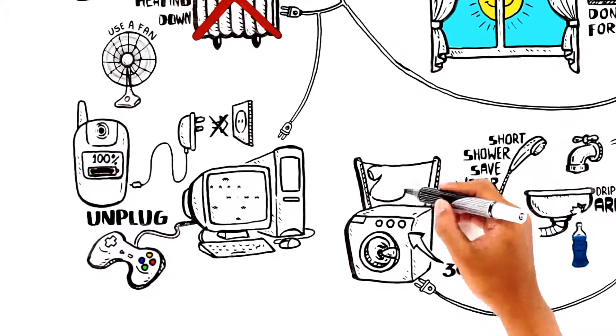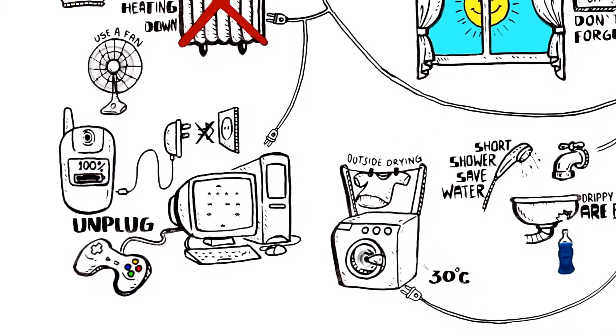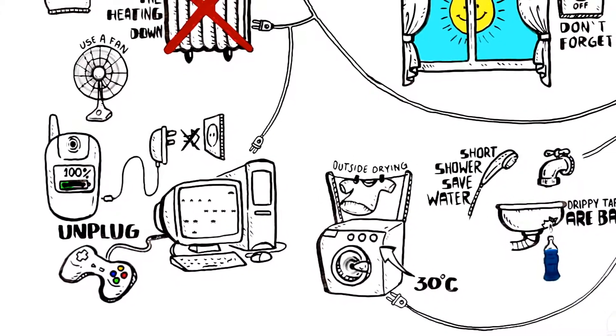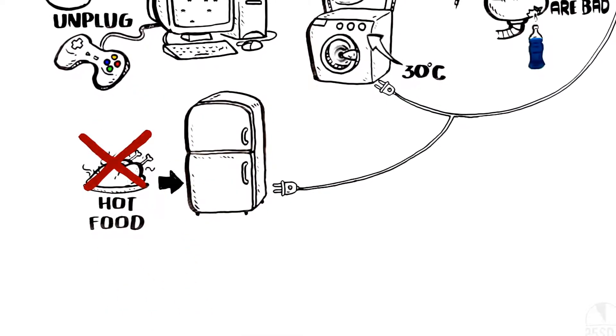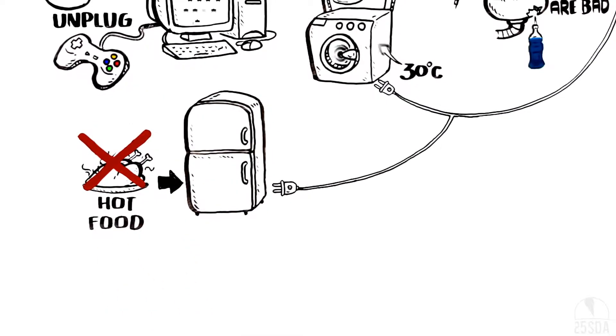Set your washing machine to wash at 30 degrees Celsius. Dry your clothes outside instead of using a tumble dryer. Close the fridge door. And never put a hot meal in the fridge. It takes a lot of energy to cool it down.